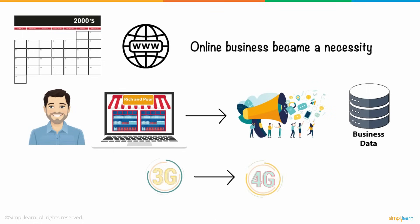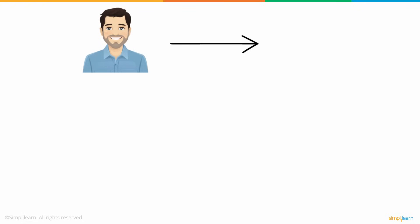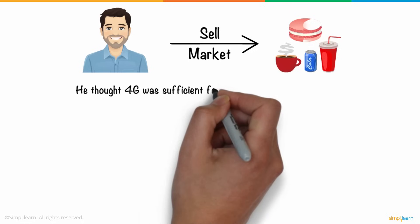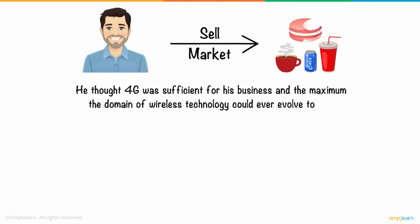This next generation of wireless technology boasted better multimedia services, higher speed, and more security. Ted was happy with his new 4G services as he could sell and market his products swiftly. But he thought 4G was sufficient for his business and the maximum the domain of wireless technology could ever evolve to.